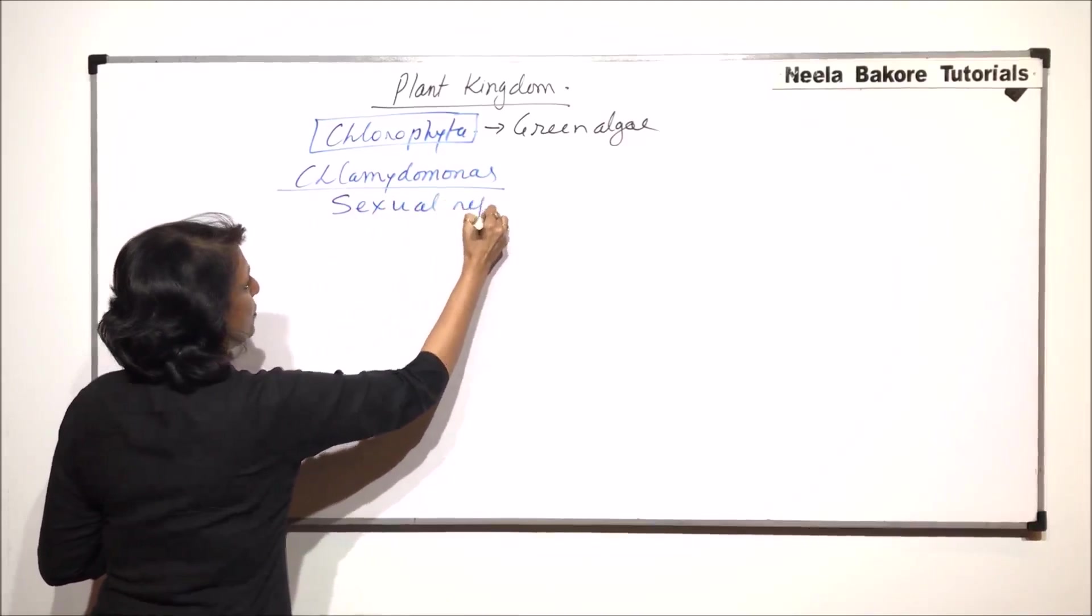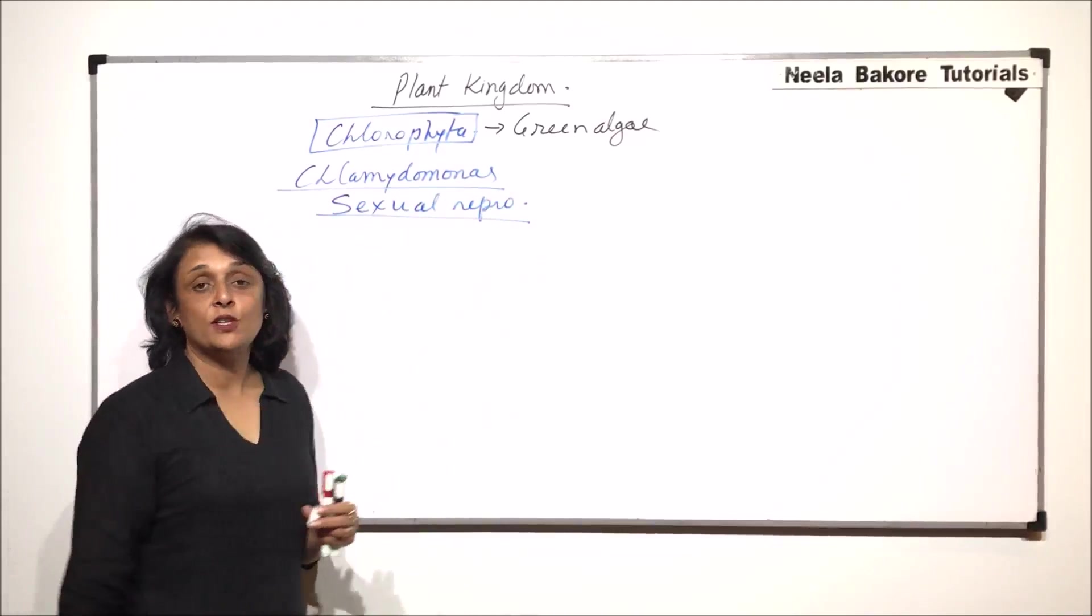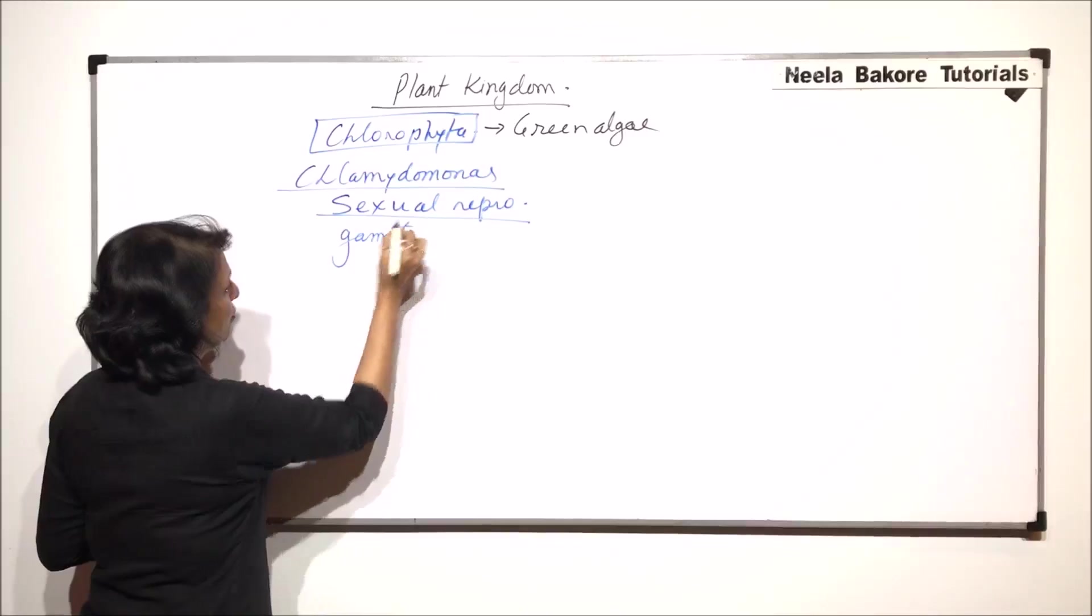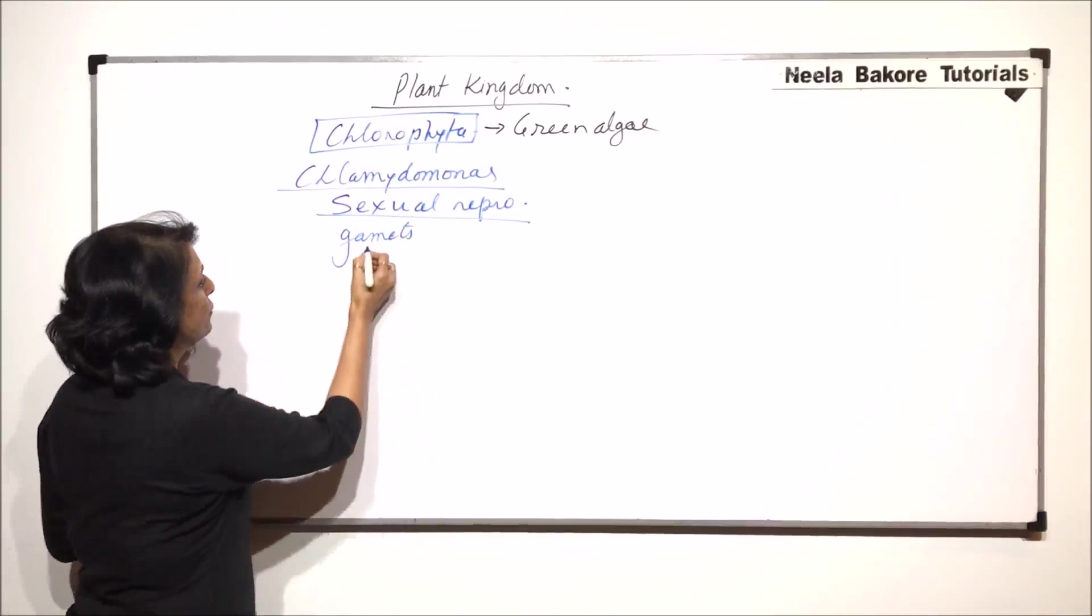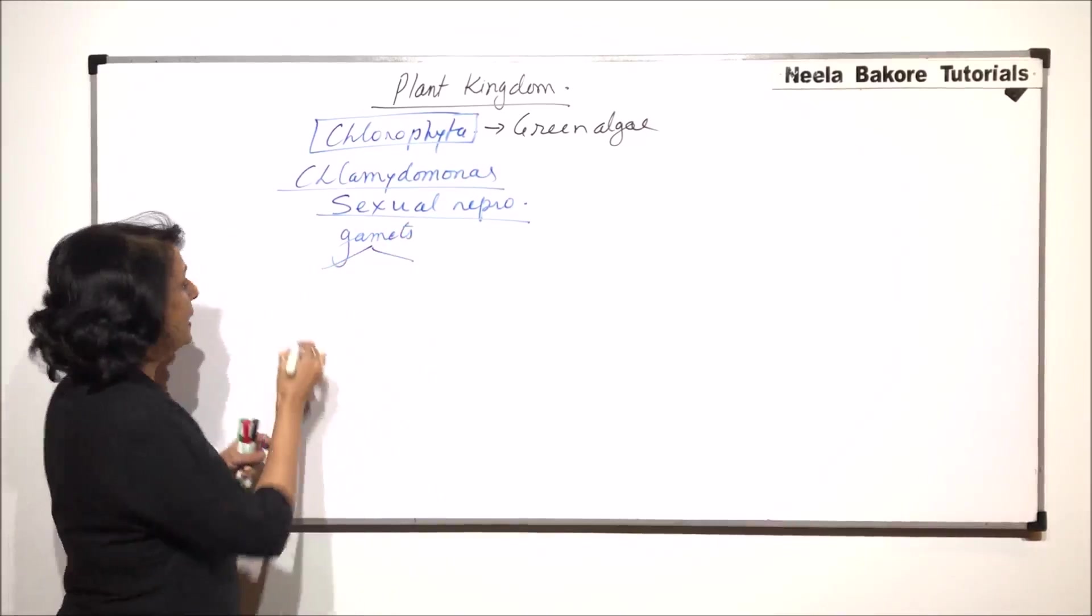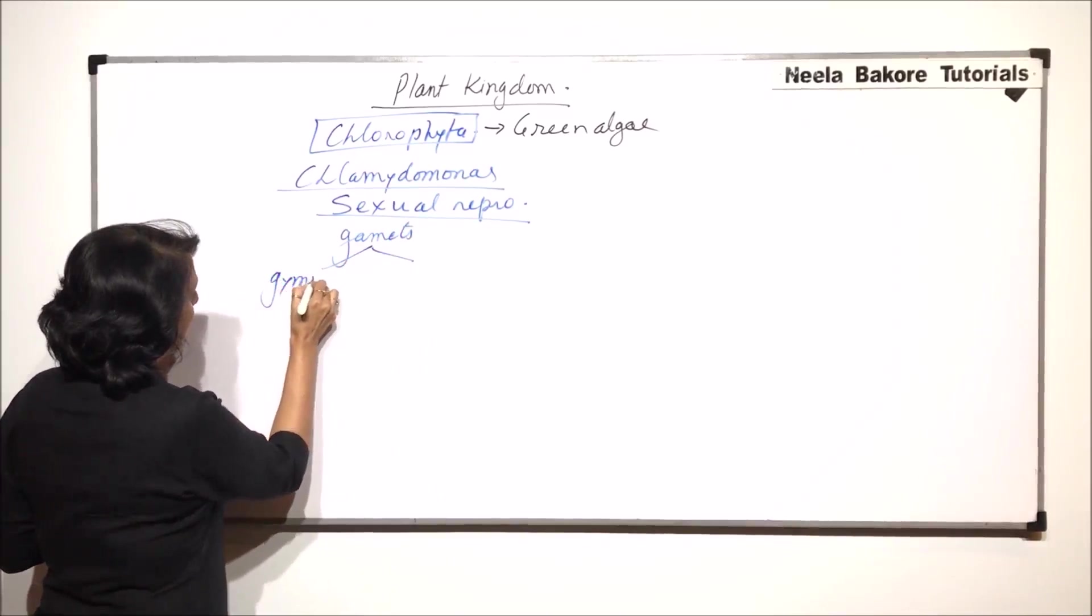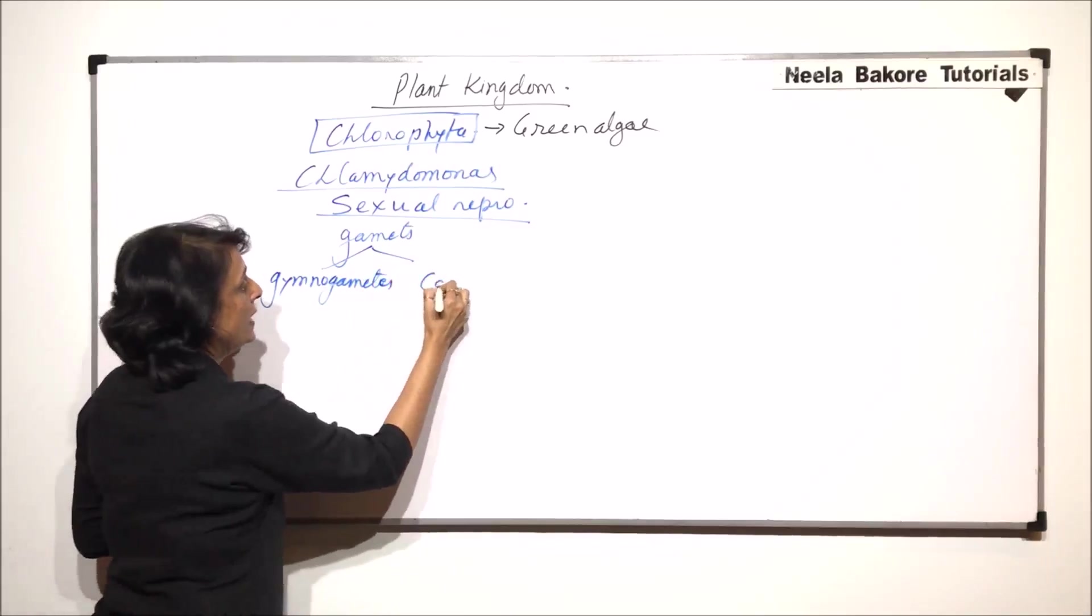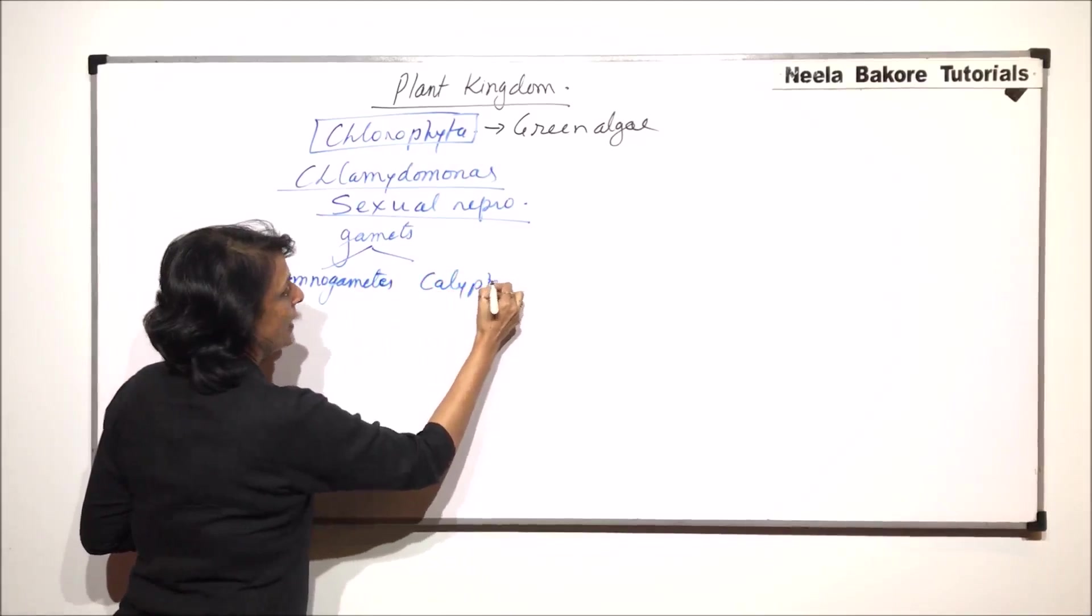Sexual reproduction takes place by gamete formation. There are gametes which are produced and these gametes can be of two types: they can be gymnogametes or they can be calyptogametes.